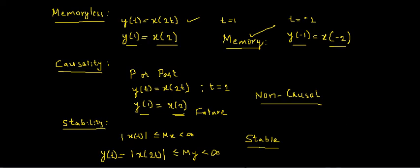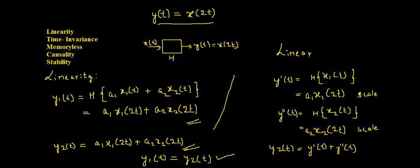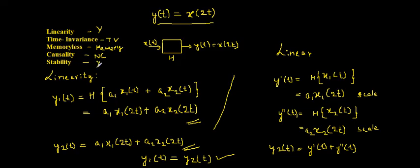To summarize: for the system y(t) = x(2t), linearity was tested and the system is linear. Time invariance was tested and the system is time variant. The system was tested for memoryless and found to possess memory. It was tested for causality and found to be non-causal, as the output depends on future input values. Finally, stability was tested and the system is stable. This concludes the example on properties of systems. Thanks for watching.